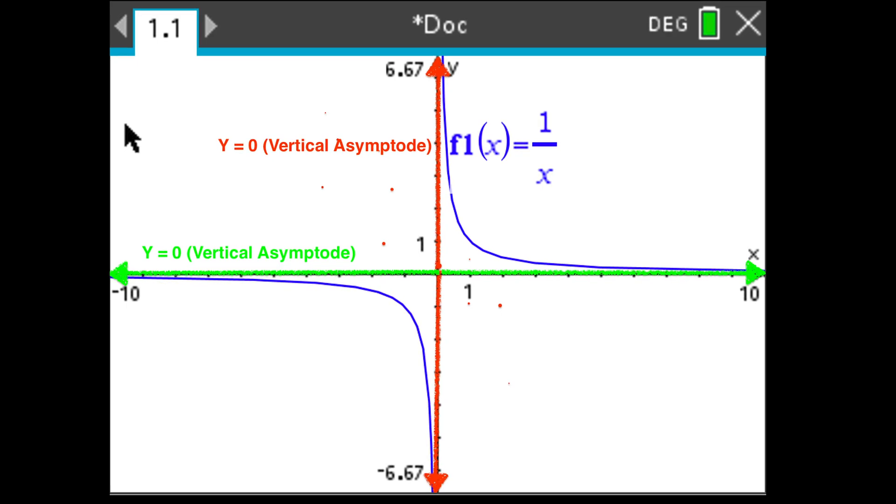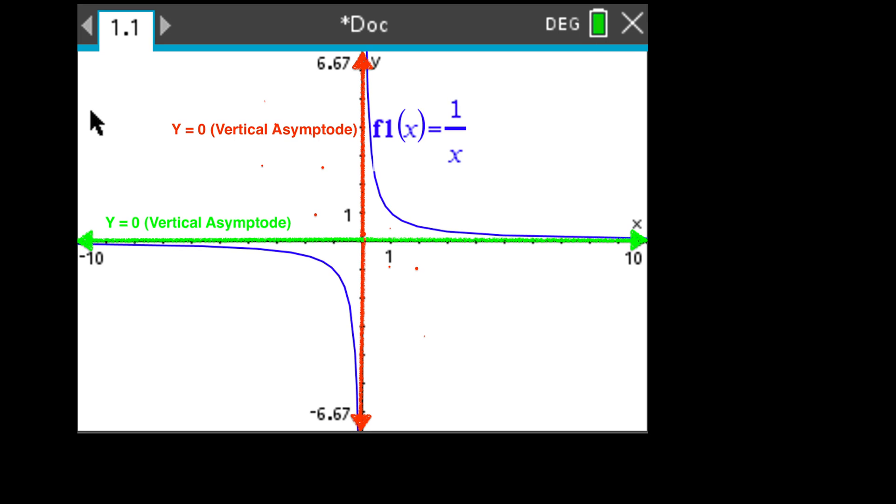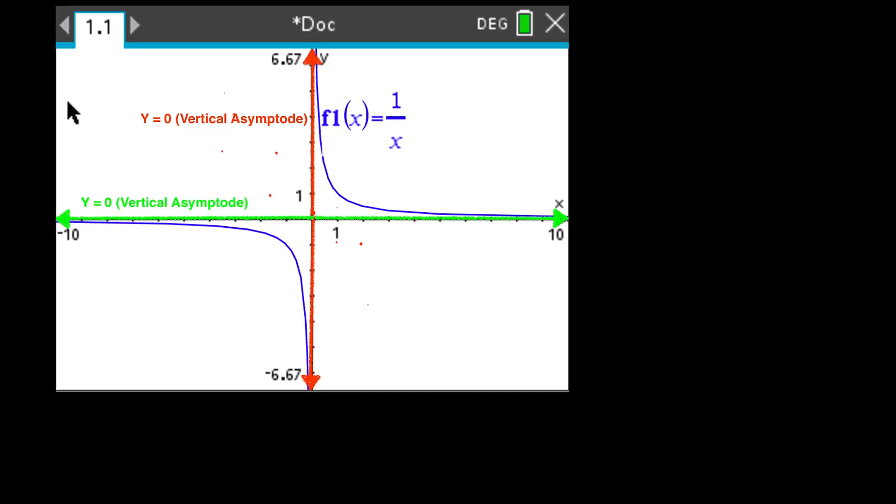To discuss the two main types of asymptotes, let's take a sample equation: y equals 1 by x.